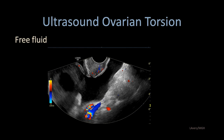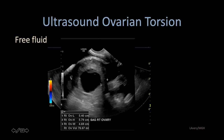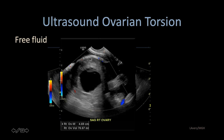Free fluid can often be found in the setting of torsed ovaries, and this should be simple serous fluid. This ovary is enlarged up to 5 centimeters in diameter in all planes without any Doppler flow, and this was a torsion ovary with a significant amount of free serous fluid in the cul-de-sac.